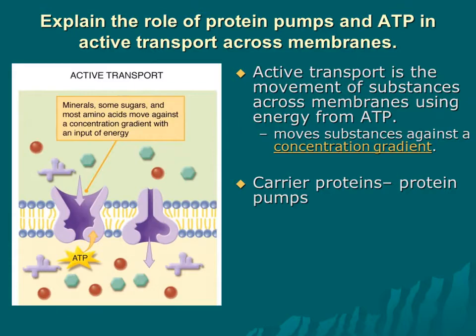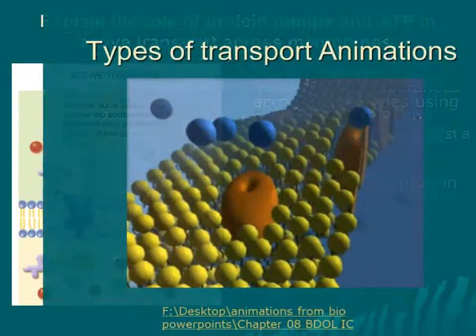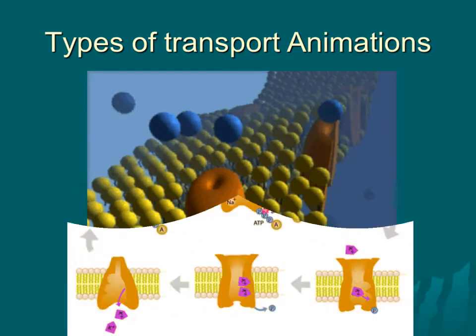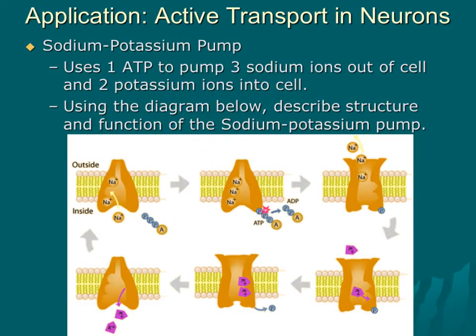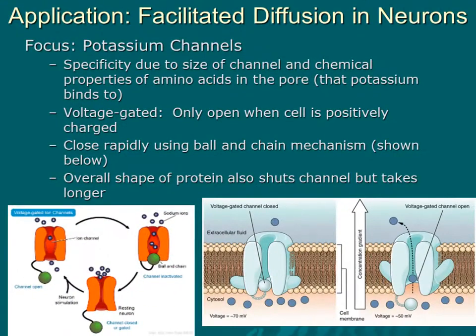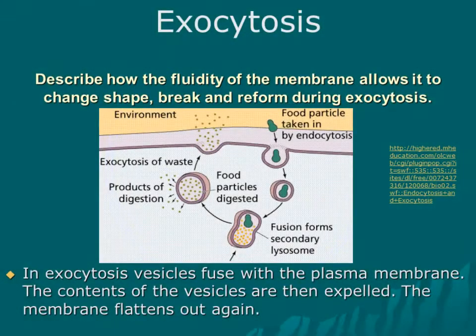Peptic ulcer. Pathogenesis of peptic ulcer. Aggressive forces: 1. H. pylori infection. 2. NSAIDs and aspirin. 3. Corticosteroids. 4. Cigarette smoking. 5. Alcohol.